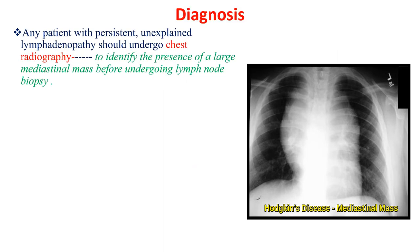Any patient with persistent, unexplained lymphadenopathy should undergo a chest radiograph to identify the presence of a large mediastinal mass before undergoing lymph node biopsy. If lymphadenopathy is not explained by an infectious or inflammatory process, the patient should be sent for a chest x-ray, as lymphoma may present with a large mediastinal mass.